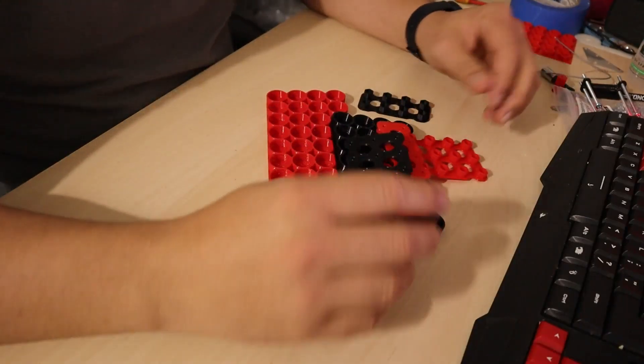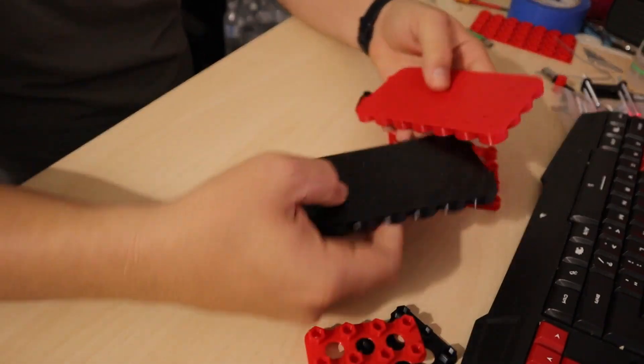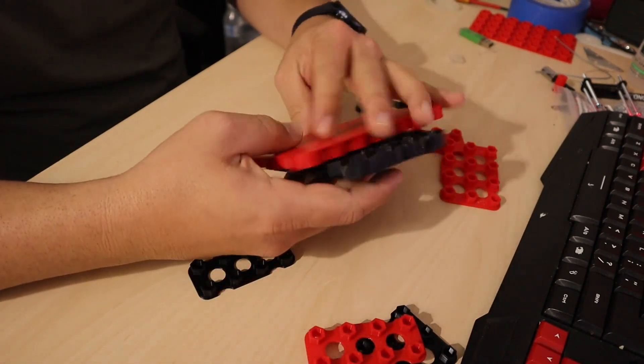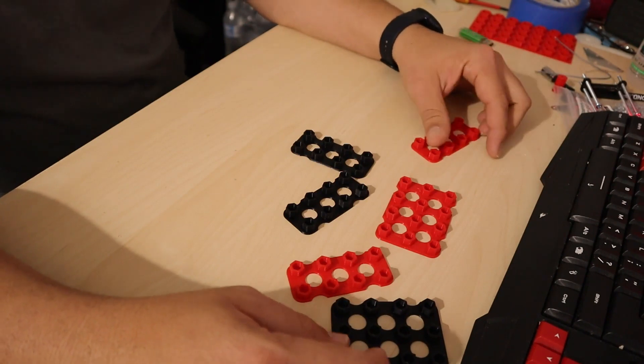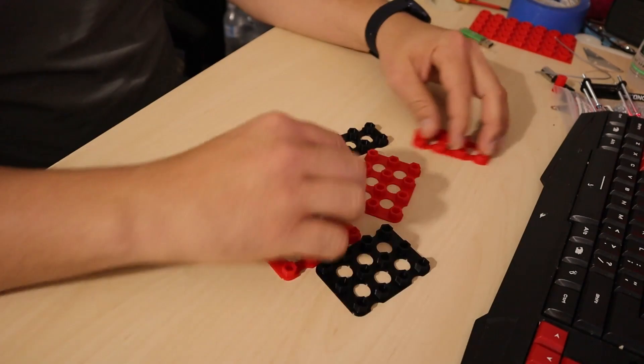When you get the kit in the mail, you're going to have a couple of pieces. Two of them are going to be the spacers that you see here. The rest of them are the placeholders for the nuts, and you're going to use them to assemble the battery kit.